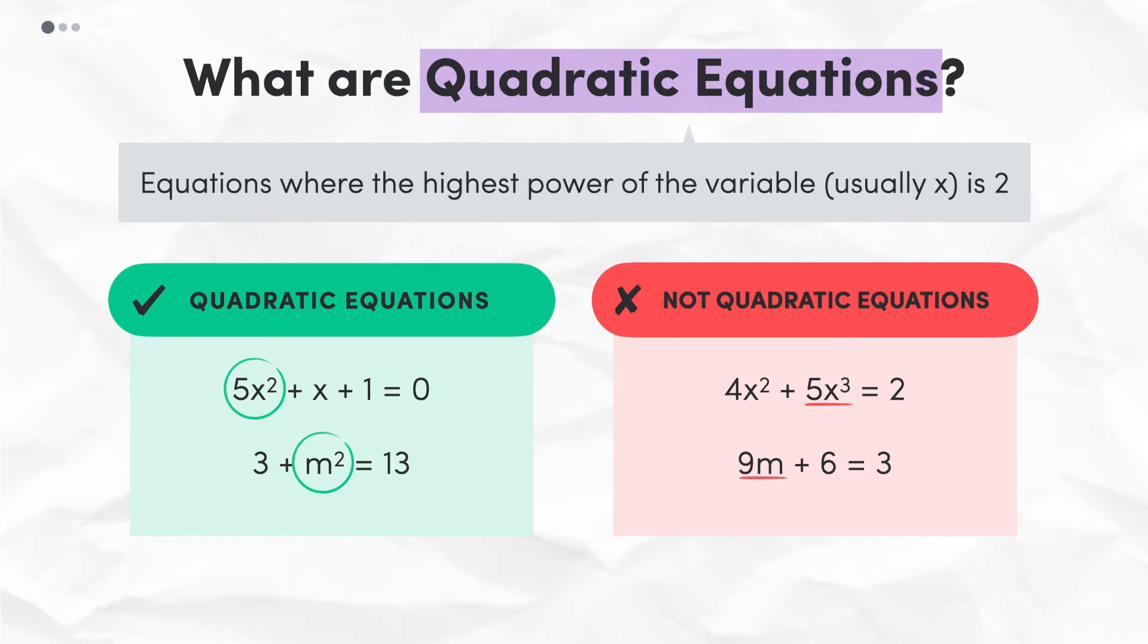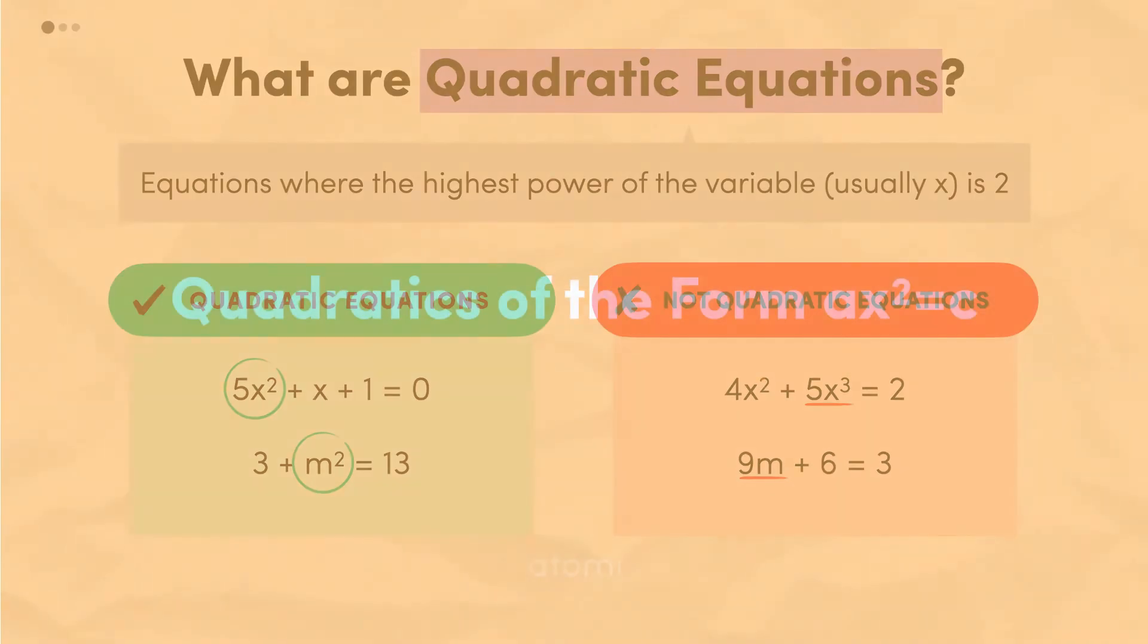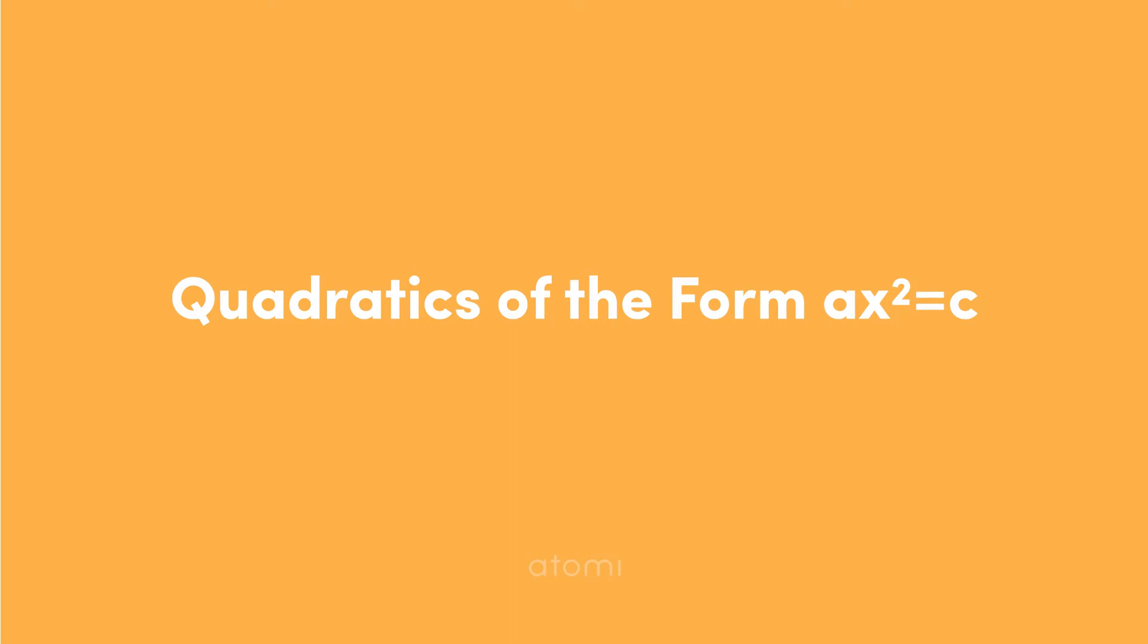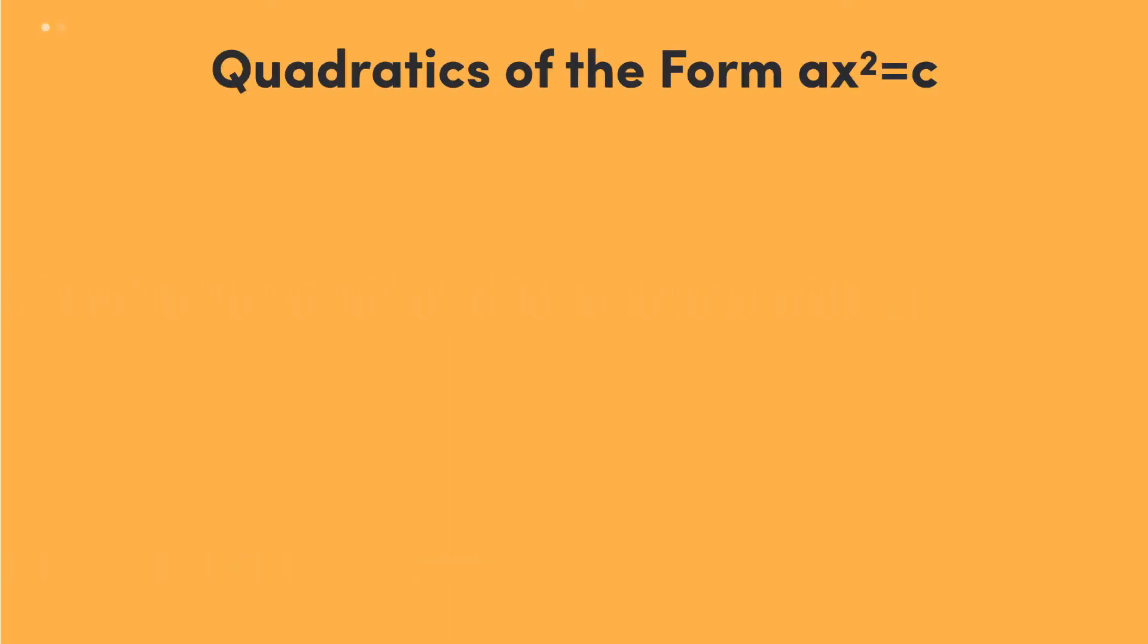So now that we know how to spot a quadratic equation, let's see how we would go about solving them. As we'll come to see, quadratics are found in many different forms, and the way that we solve them will depend on the form that it's in. So let's start by seeing how we would solve a quadratic in the form ax squared equals c.